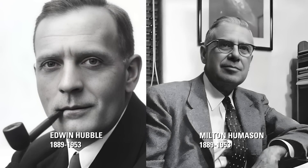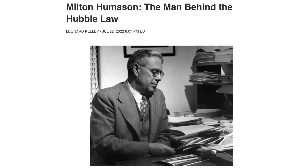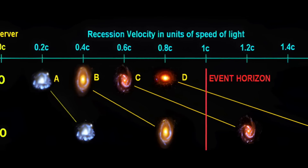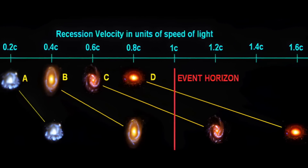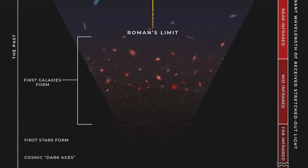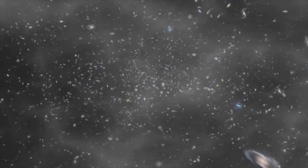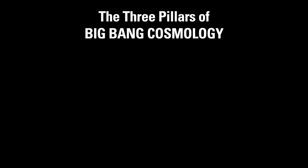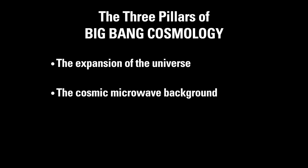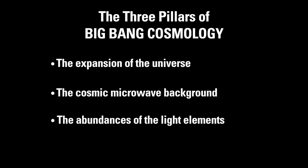It was Hubble's observation and the spectral analysis by Milton Humason that established the correlation between luminosity and redshift. In every direction that Hubble observed, decreasing luminosity correlated with increasing redshift. The interpretation of redshift as a Doppler effect arising from recessional velocity led to the conclusion that the universe was expanding. Simple extrapolation backwards in time drove Gamow and others to conclude that the universe must have started with what later came to be called the Big Bang. Big Bang theory is commonly said to be based on three main pillars of observational evidence: the expansion of the universe proved by the Hubble redshift-luminosity relationship, the cosmic microwave background, and the abundances of the light elements.